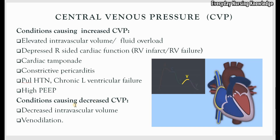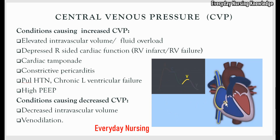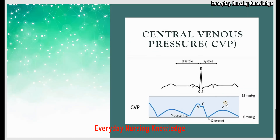Conditions that can cause decreased CVP include decreased intravascular volume — when the patient is in fluid deficit, CVP decreases. In venodilation, there is peripheral pooling of blood. As a result, venous return to the heart decreases, and when venous return decreases, CVP decreases. Today we learned about central venous pressure — thanks for watching.